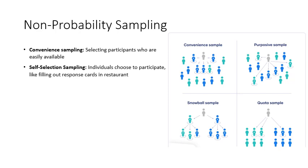Another example at Diné College is just sending an email survey — 'please complete our survey.' Right away we know we're not getting a representative sample because the people who don't complete it are likely to be different in some way from those who do. So it's not a good sampling method, even though it's easy.